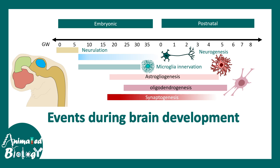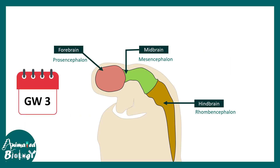Synaptogenesis is modified based on experience and external stimuli. At around gestational week 3, this is the basic blueprint of the brain. The red portion is known as the forebrain or prosencephalon. The green portion is known as the mesencephalon. The yellow portion is known as the hindbrain or rhombencephalon. This is a broad demarcation of the three regions of the brain.